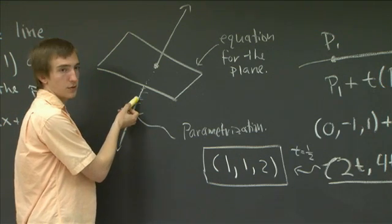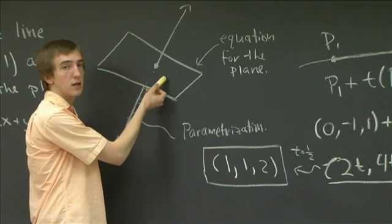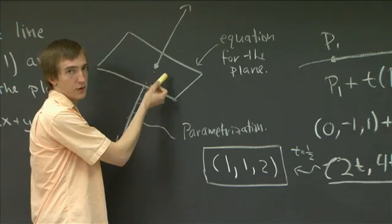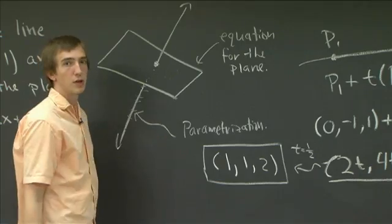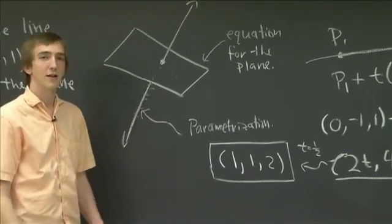Then we need to parametrize our line, and then we need to plug in our parametrization to our equation for the plane, and then solve for the value of T, which makes it true. Finding that T, then we've, that's equivalent to finding a point on our line. And I think I'll leave it at that.